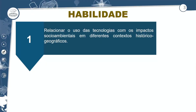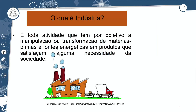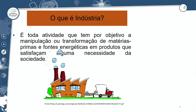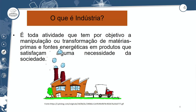Relacionar o uso de tecnologias com os impactos socioambientais em diferentes contextos históricos geográficos. Primeiramente, nós temos um conceito: o que é a indústria. Toda atividade que tem por objetivo a manipulação ou transformação de matérias-primas e fontes energéticas em produtos que satisfaçam alguma necessidade da sociedade.